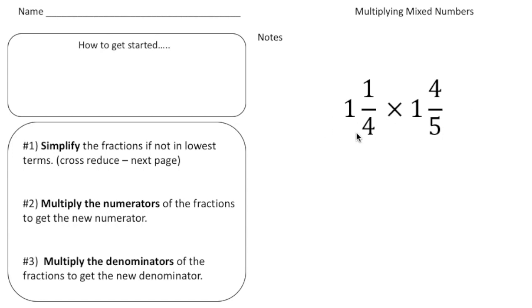Alright, so here we're going to multiply the numbers 1 and 1 fourth times 1 and 4 fifths. So what I've done is I've given you kind of a three-step process to show you how to multiply mixed numbers.